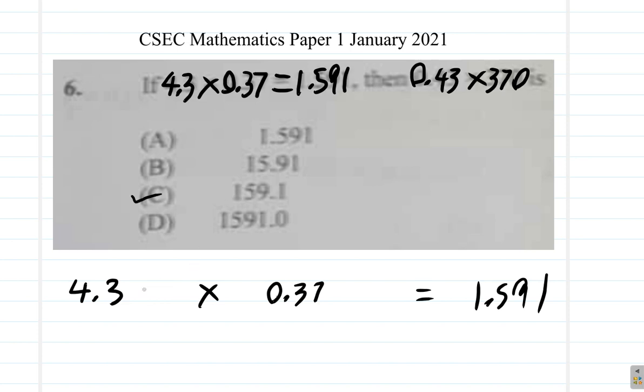But let's look at it another way. You see the 4.3? They turn it into 0.43. What you would have to do is multiply that by 1/10, alright? So 4.3 by 1/10, same as 4.3 divided by 10, gives you 0.43.